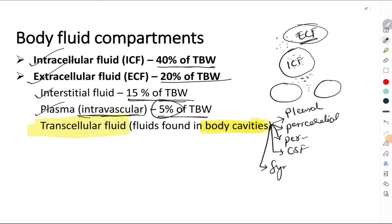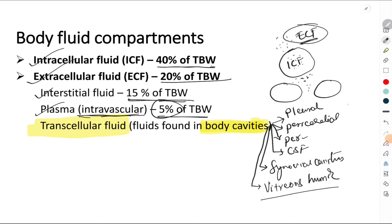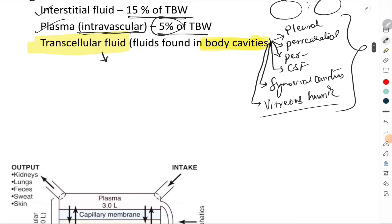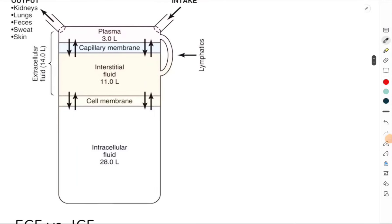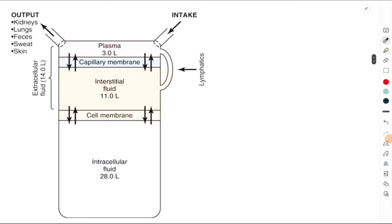The fluid which is present in the synovial cavities is also an example of transcellular fluid. One more example is the fluid which is present in the eye, which is called as the vitreous humor or vitreous body. So all these are examples of transcellular fluid, which constitutes a very minimal percentage.